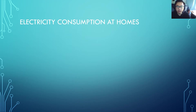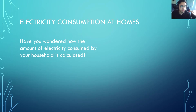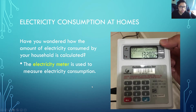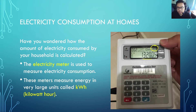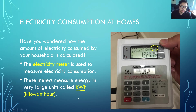Let's move on to electricity consumption at home. Have you wondered how the electricity consumed by your household is calculated? The electricity meter is used to measure electricity consumption. Modern electric meters measure energy not in joules but in large units called kilowatt hours. For example, this electricity meter shows 1320.09 kilowatt hours of energy. So kWh is another, larger unit for energy.